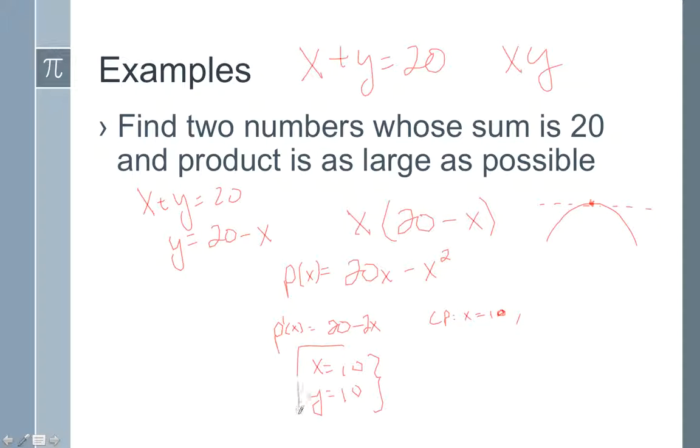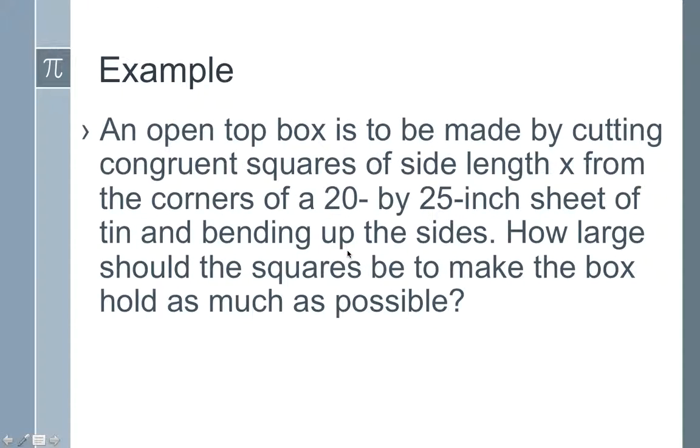That was pretty simple. It's easily done with a graphing calculator or with your knowledge of a quadratic function. But not all problems are that easy. Let's take a look at one that might be a little bit more challenging. You have an open top box made by cutting congruent squares of side length x from a 20 by 25 sheet of tin.